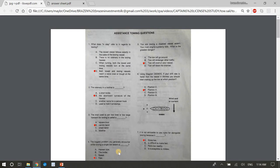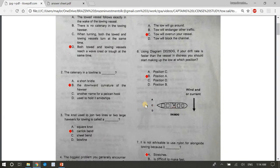Four, the biggest problem you generally encounter while towing a single toe astern is? The answer is D, yaw. Question five, you are towing a disabled vessel astern. Your main engine suddenly fails. What is the greatest danger? Answer C, the toe will overrun your vessel. Six, using the diagram D25G, if your drift rate is faster than the vessel in distress, you should start making up the toe at which position? Position A, B, C, or D. If your drift rate is faster than the vessel in distress, you should start making up the toe at which position? The answer is A.